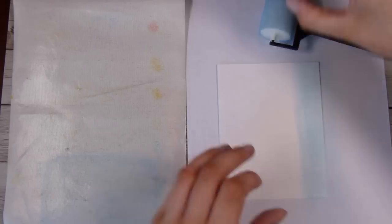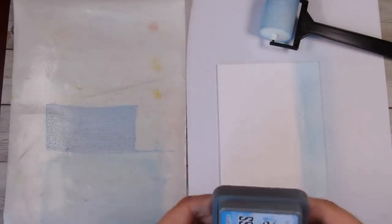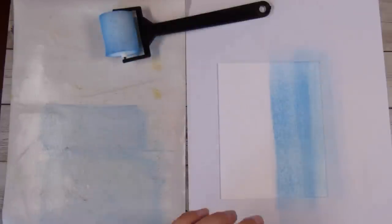Then roll it down onto my paper. This is just some 80-pound Neenah Solar White paper. I'm going from my lightest color to my darkest color.